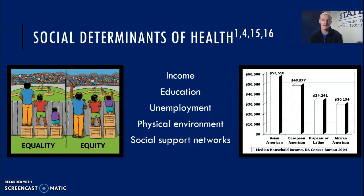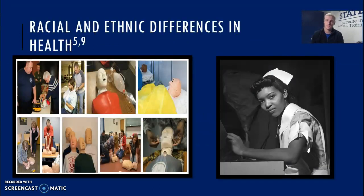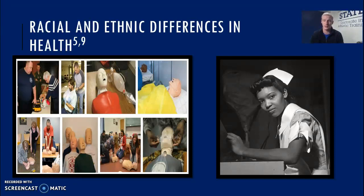Minority status does not necessarily mean poor health indicators — Asian Americans actually have a better health status compared to the white majority. When you look at racial and ethnic differences, we find that most healthcare providers are actually white. In my profession of athletic training, 80.4% of clinicians are white, while only 4% are Black. This is of grave concern as many healthcare providers actually learn to provide healthcare on simulators and task trainers that are white.